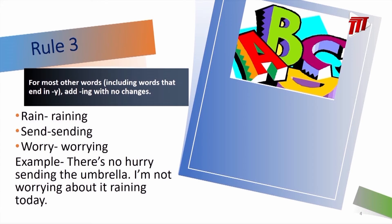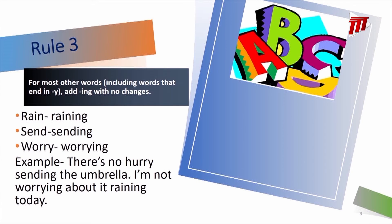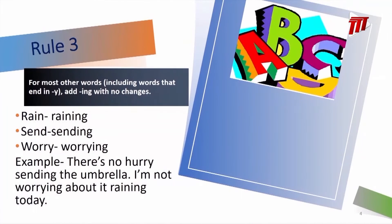And finally, we have rule 3. Rule 3 says: for most other words, including words that end in Y, we add ING and we make no changes. So the word 'rain' — we simply add ING to produce 'raining': R-A-I-N-I-N-G. 'Send' becomes 'sending': S-E-N-D-I-N-G. 'Worry' becomes 'worrying': W-O-R-R-Y-I-N-G. Notice — for other spelling rules, we change the Y to I and then add the inflectional ending. However, that does not happen here when we add ING. We keep the Y and then add ING. In a sentence: 'There's no hurry sending the umbrella. I'm not worrying about it raining today.'